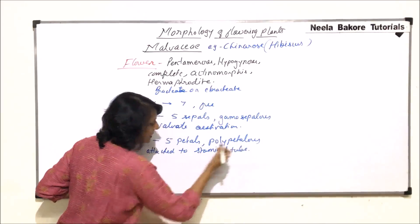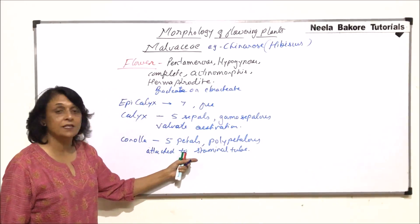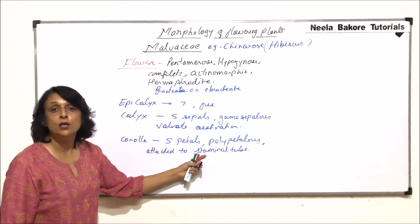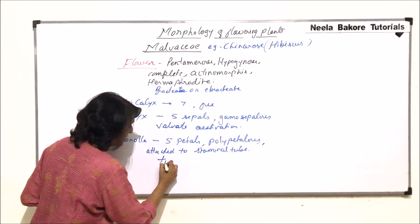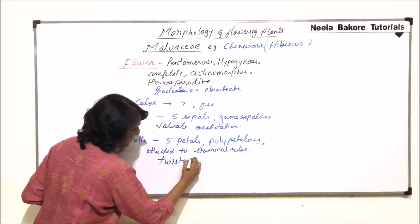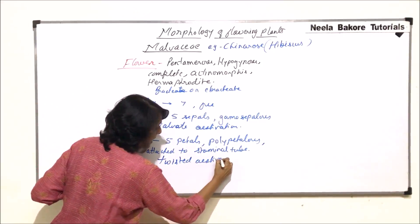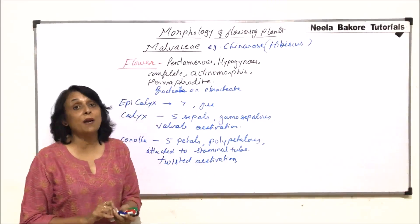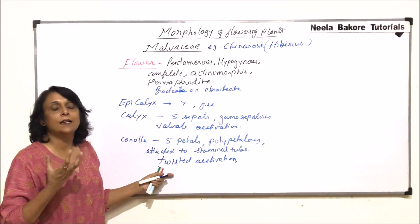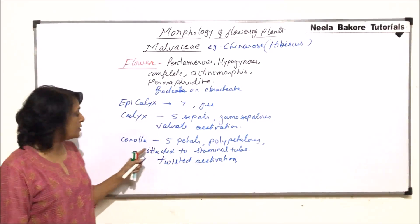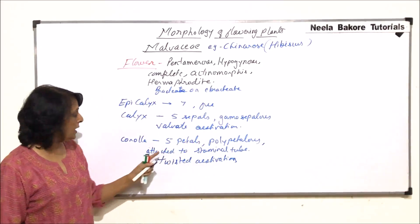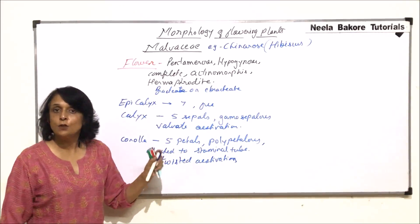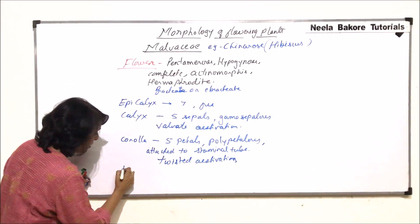Once we understand the structure, we know what exactly the staminal tube is. The petals are attached to the staminal tube, and the aestivation is twisted. The petals are showy — that means they are large and brightly colored so they can attract insects for pollination. So: five petals, free, attached to the stamen, and aestivation is twisted.